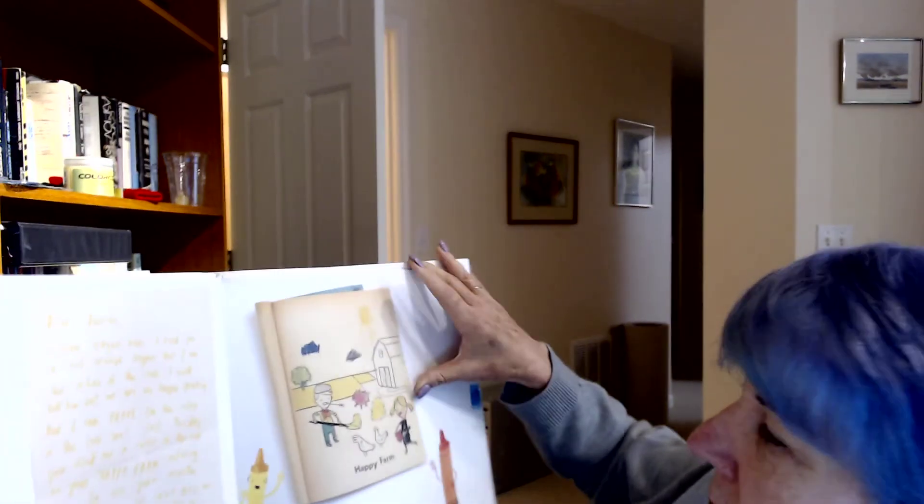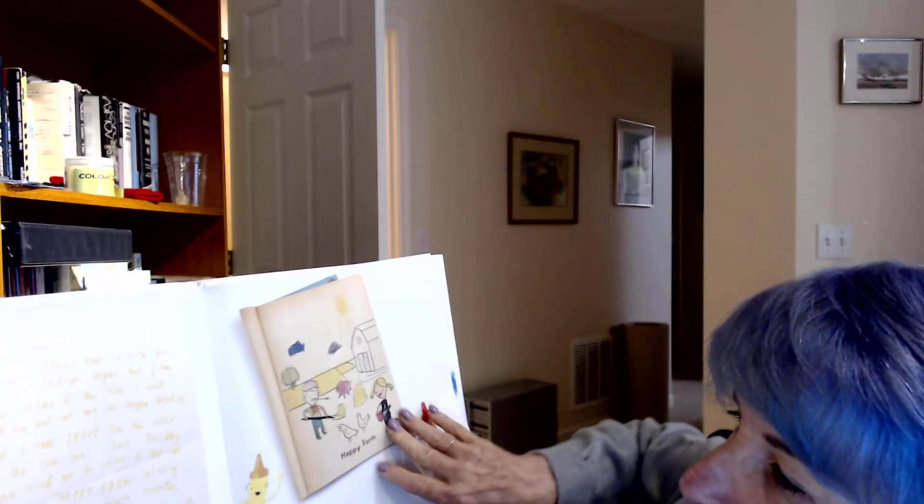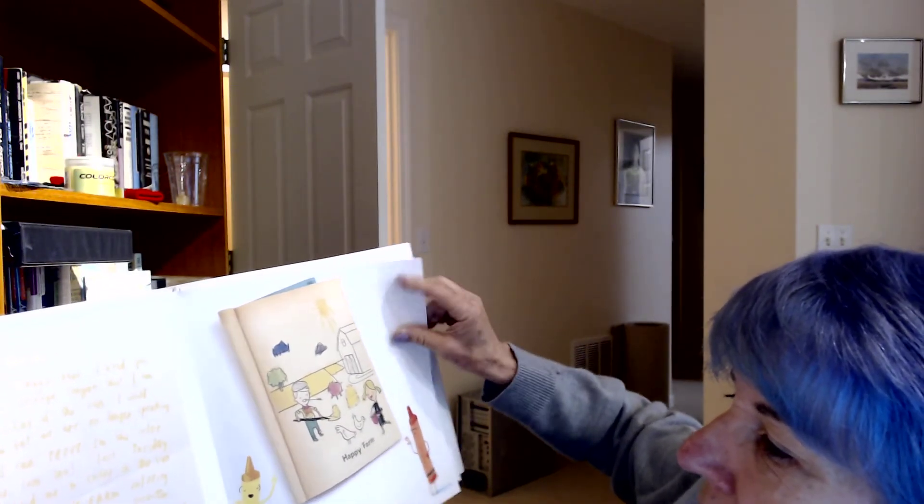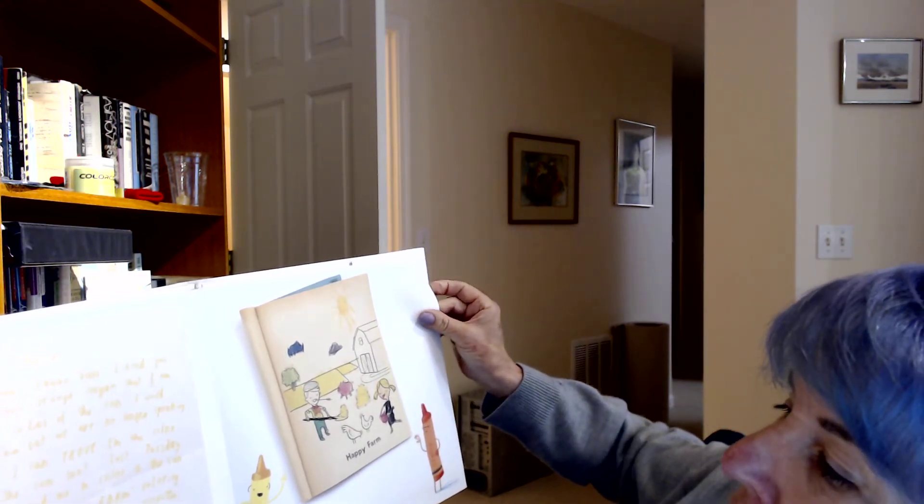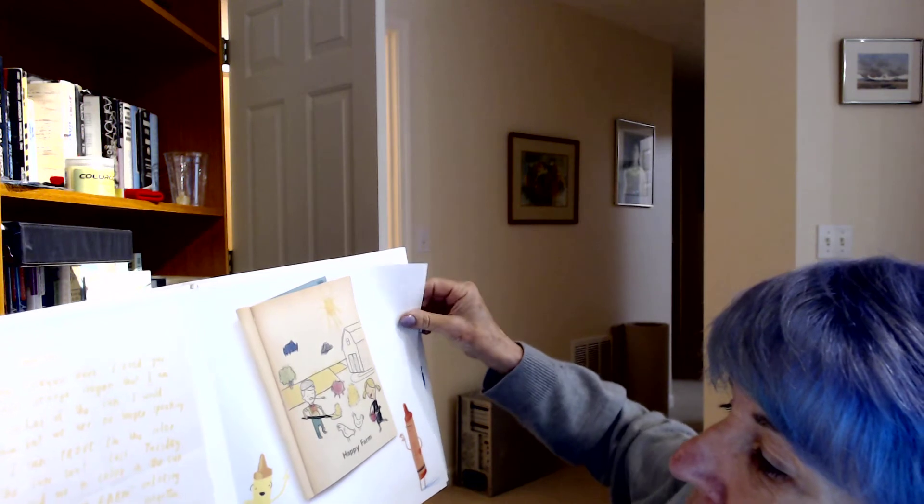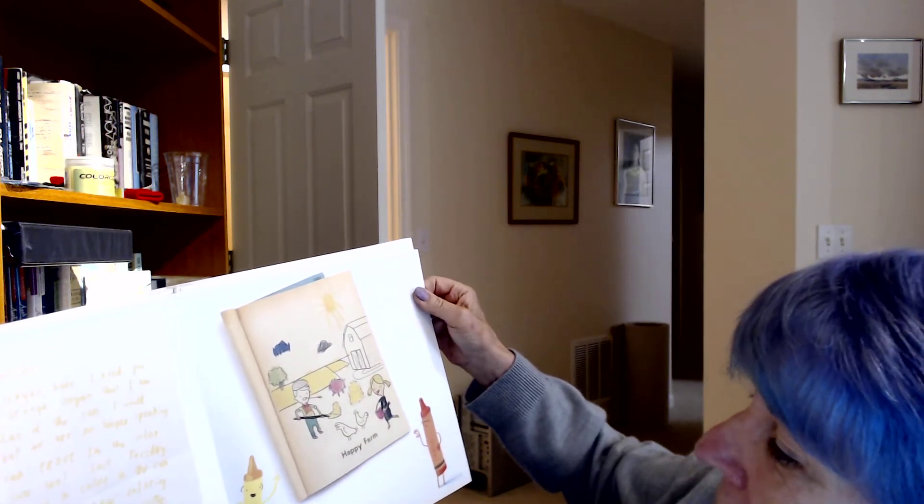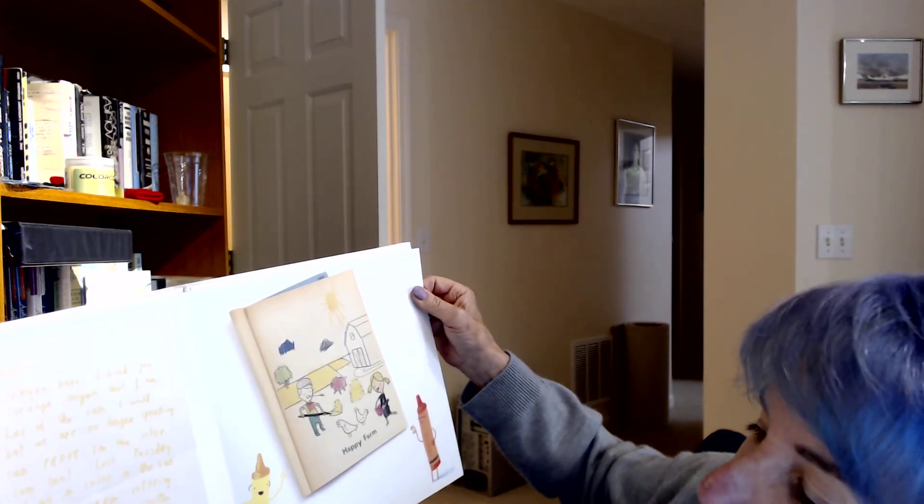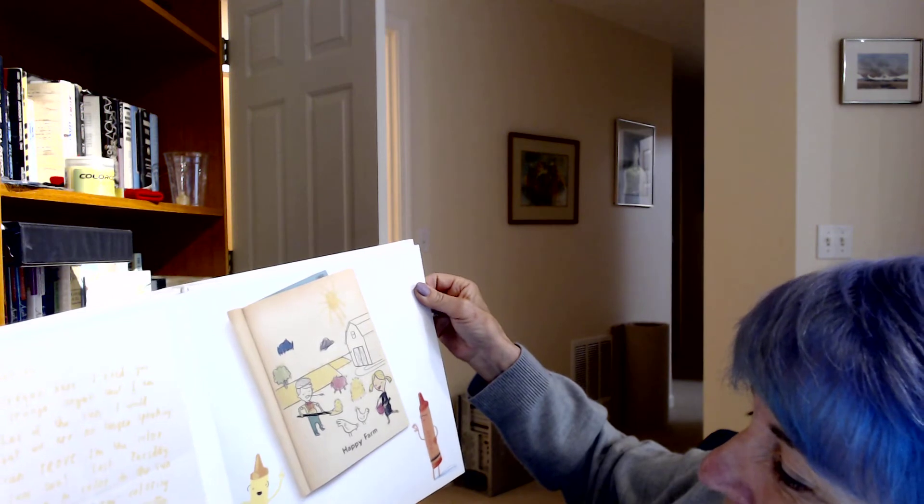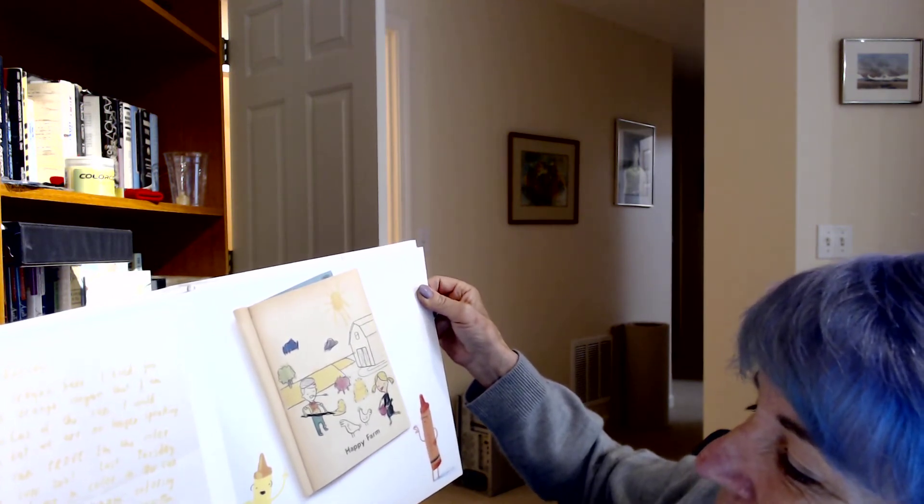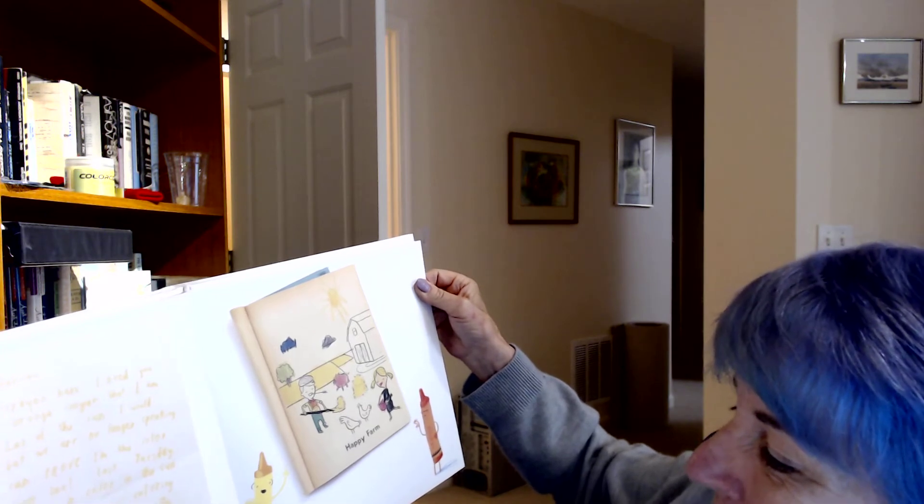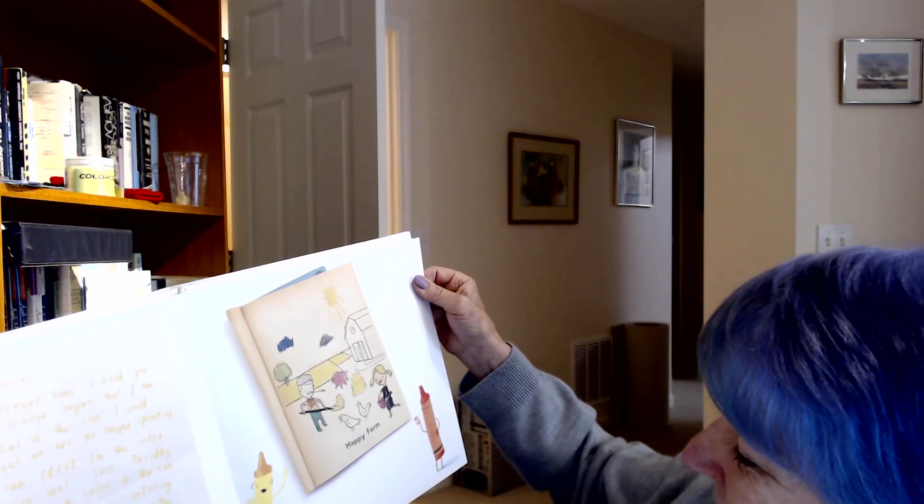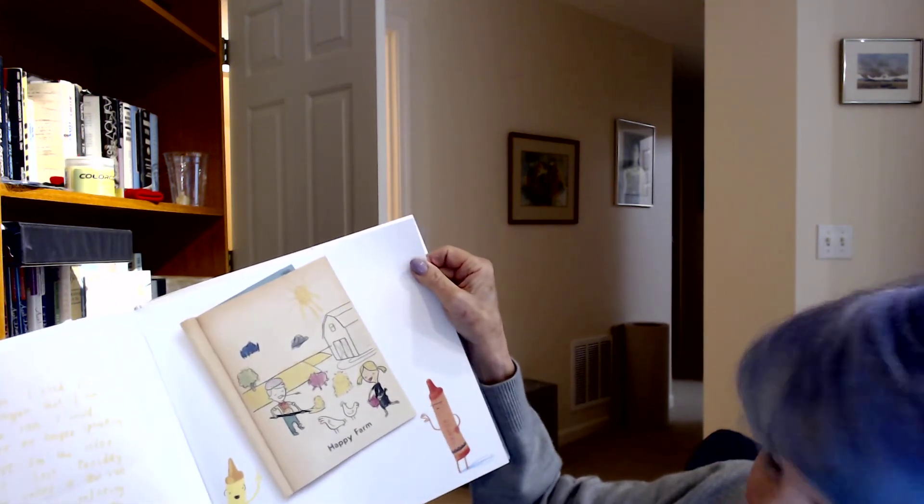Uh-oh. Dear Duncan, Yellow Crayon here. I need you to tell Orange Crayon that I am the color of the sun. I would tell him, but we are no longer speaking. And I can prove I'm the color of the sun, too. Last Tuesday, you used me to color in the sun on your Happy Farm coloring book. In case you've forgotten, it's on page seven. You can't miss me. I'm shining down brilliantly on a field of yellow corn. Your pal, and the true color of the sun, Yellow Crayon. There's the Happy Farm. And there's the Yellow Crayon.